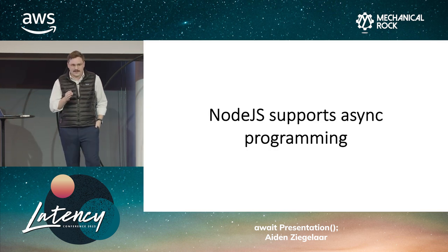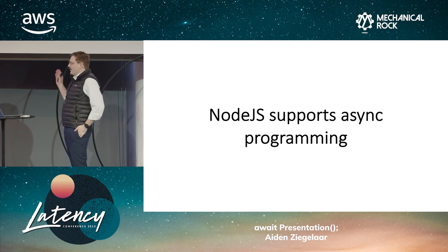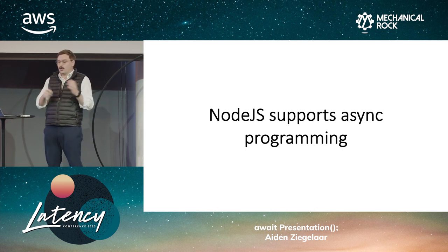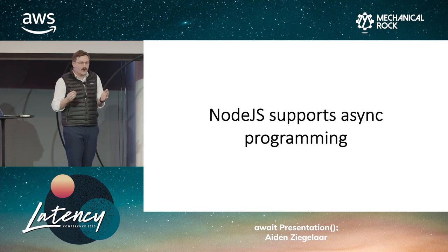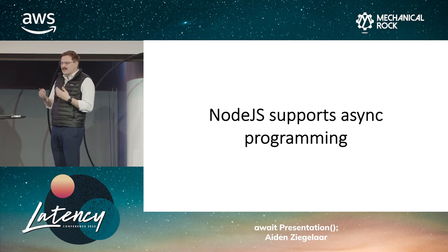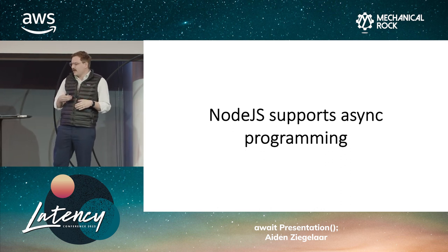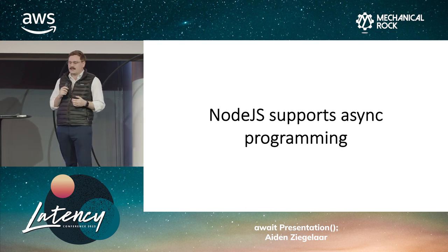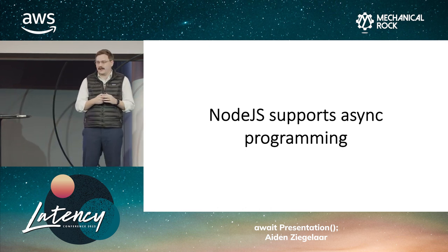We're going to dive straight into the deep end. The first piece of background knowledge you're going to need is that Node.js supports asynchronous programming. We started with callbacks, and anyone who was programming in JS during that period will remember the horrible levels of indent we all went to in our editors to support that. Then we got promises in ES 2015, which made our code a little bit more legible. And then finally, in ES 2017, we got async and await, which allowed us to breathe a collective sigh of relief at the new levels of code legibility.